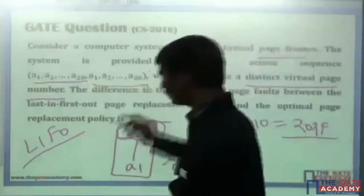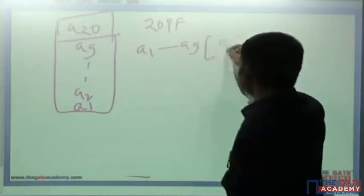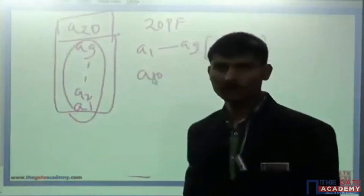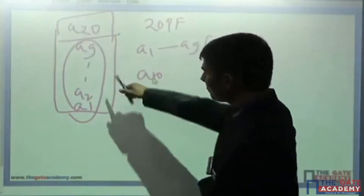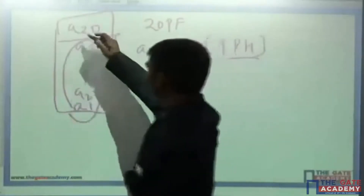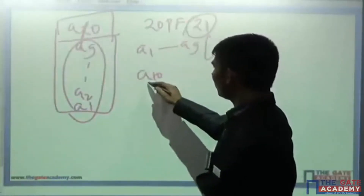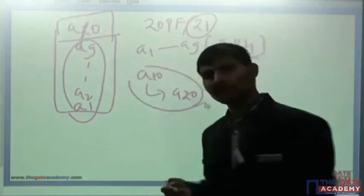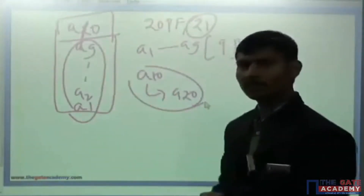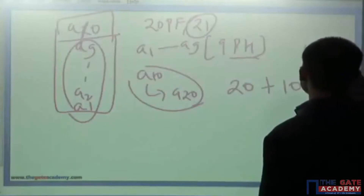Now again you repeat the sequence from A1 to A20. As of now, 20 page faults. From A1 to A9, 9 page hits will be there, but as soon as A10 comes, again a page fault occurs. According to LIFO, A20 is the page last in, so it comes out — that makes 21. From A10 to A20, all pages get a miss, resulting in 10 more page faults. So totally, 20 previously plus 10 this time: total 30 page faults using last in first out policy.